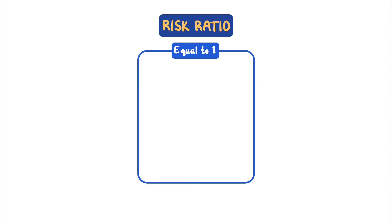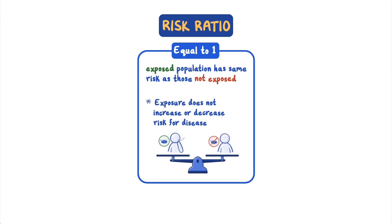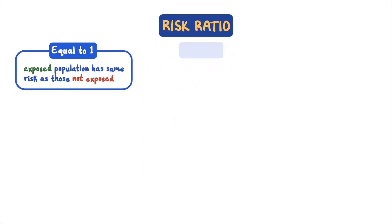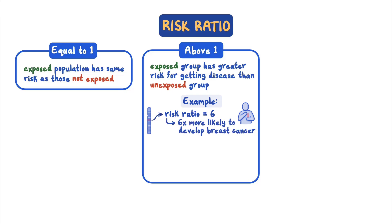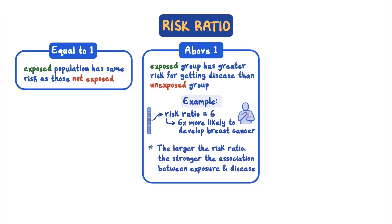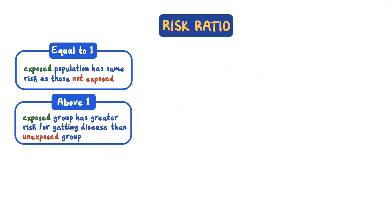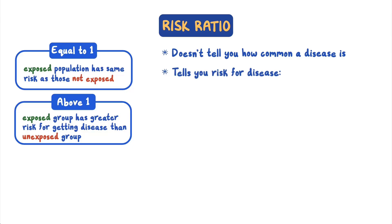If the ratio is 1, then the exposed population has the same risk for disease as those who are not exposed, so the exposure does not increase or decrease the risk for disease. A risk ratio above 1 indicates that the exposed group has a greater risk for getting the disease than the unexposed group. For example, the risk ratio for breast cancer among women with the BRCA1 gene mutation is about 6, meaning that women with the BRCA1 gene mutation are about 6 times more likely to develop breast cancer than women without that mutation. The larger the risk ratio, the stronger the association between an exposure and a disease. It is important to remember that a risk ratio doesn't actually tell you how common a disease is — it just tells you the risk for the disease in the exposed groups as compared with the unexposed groups.